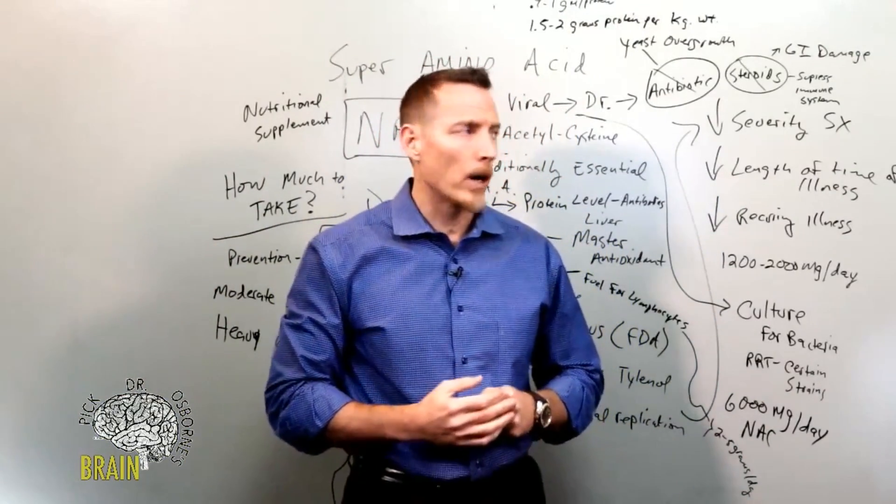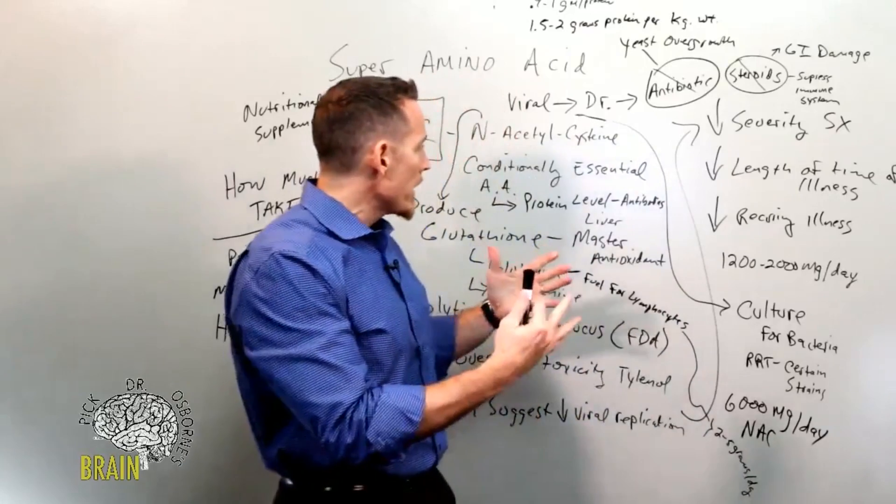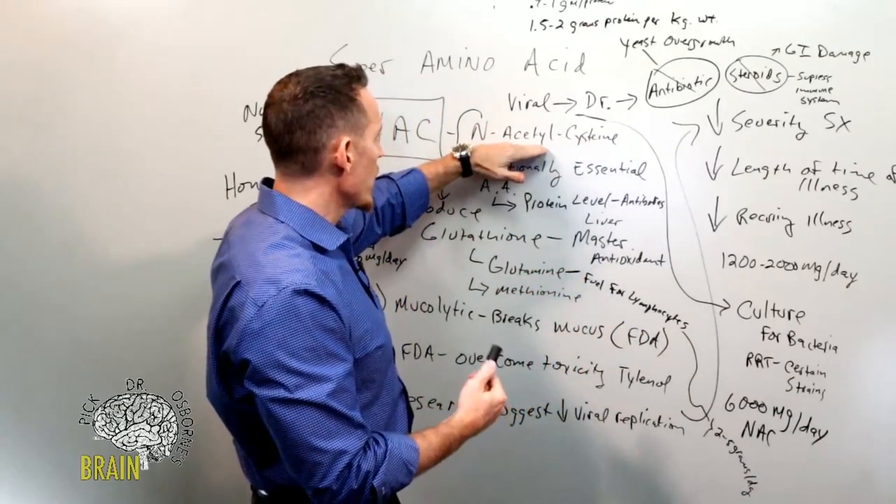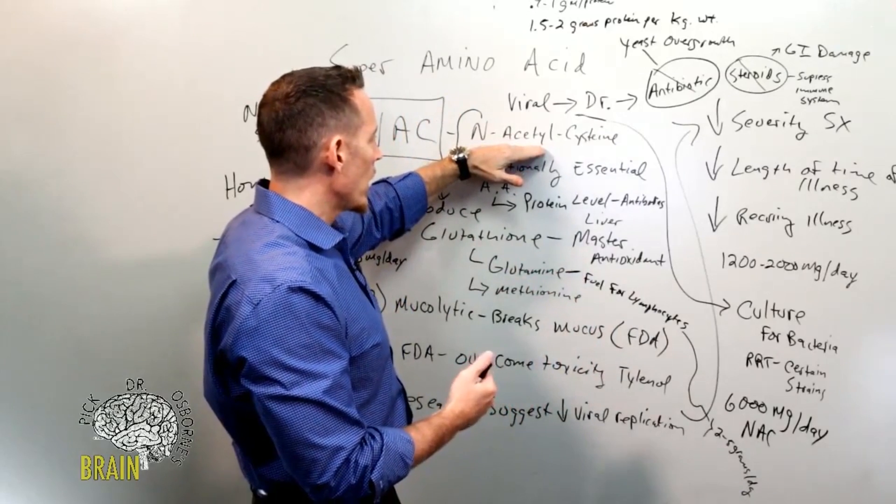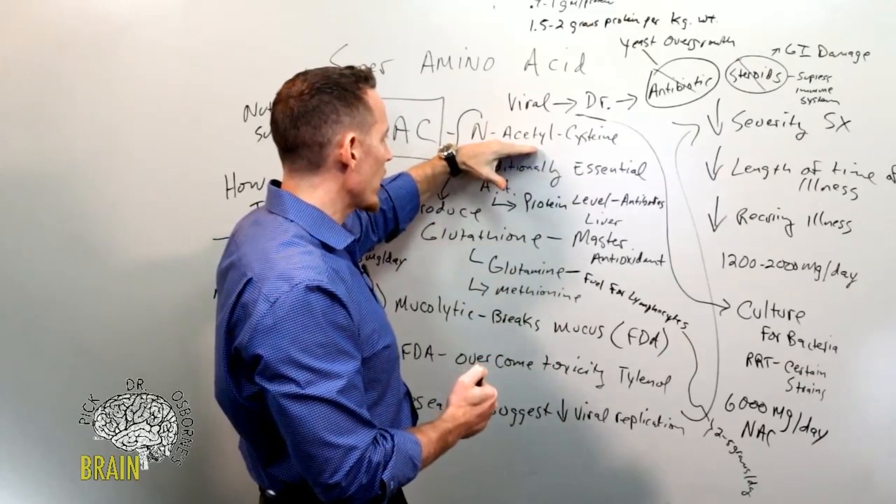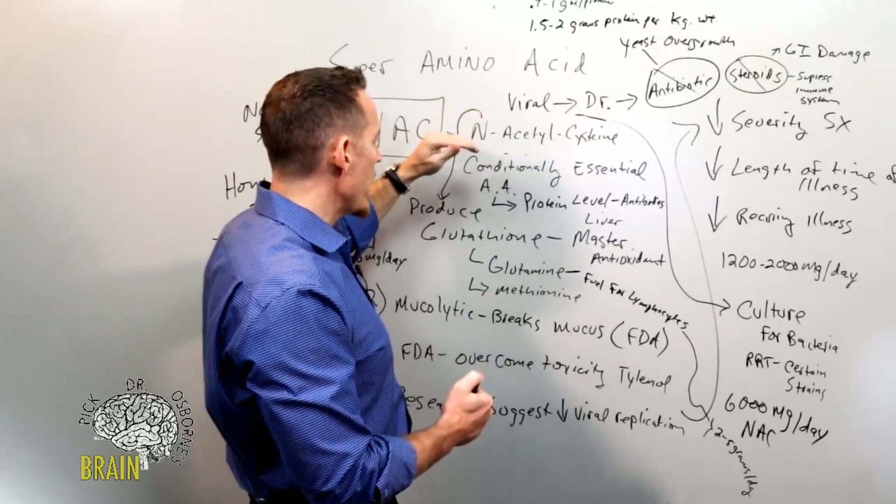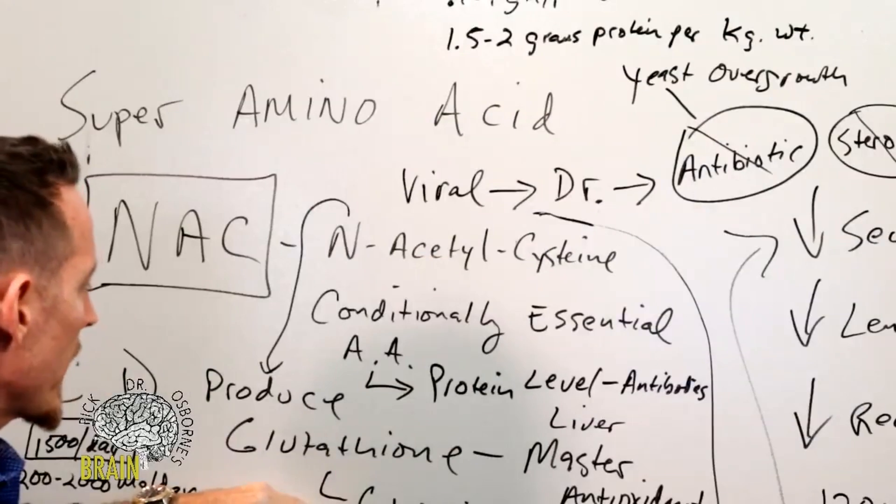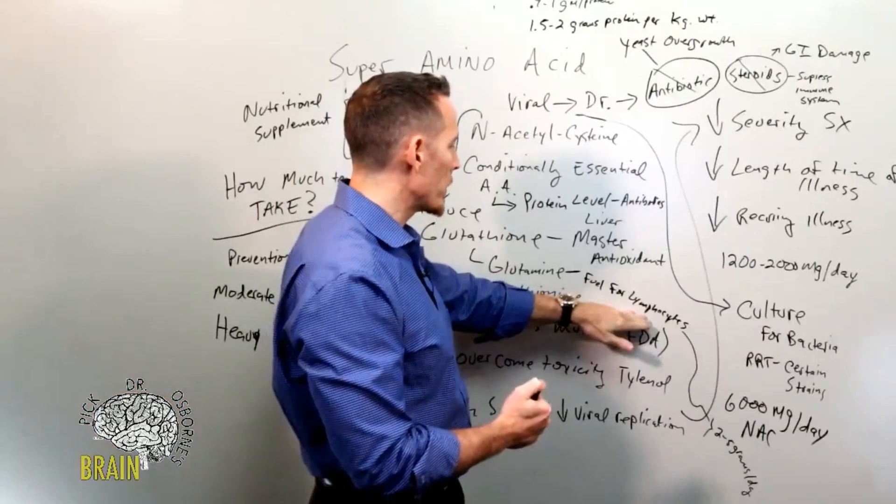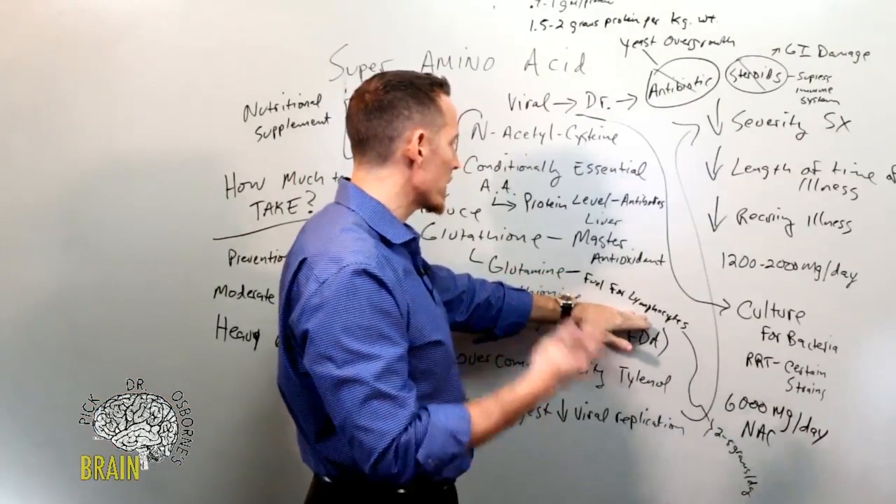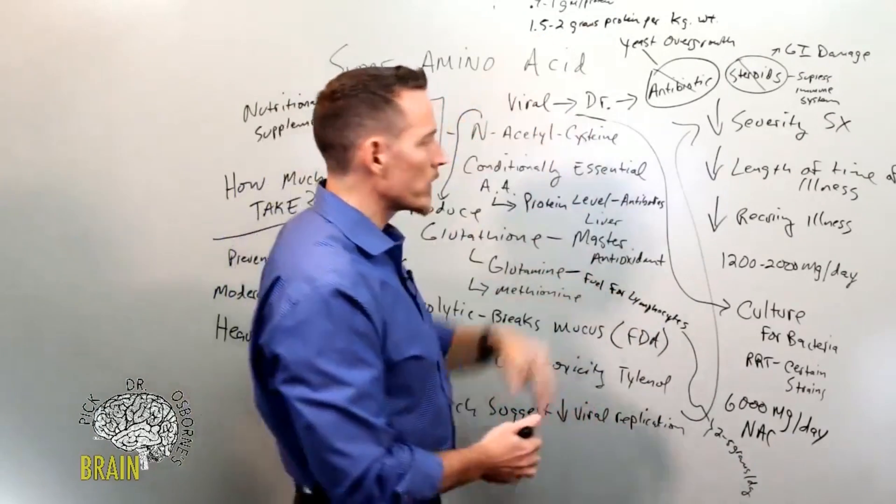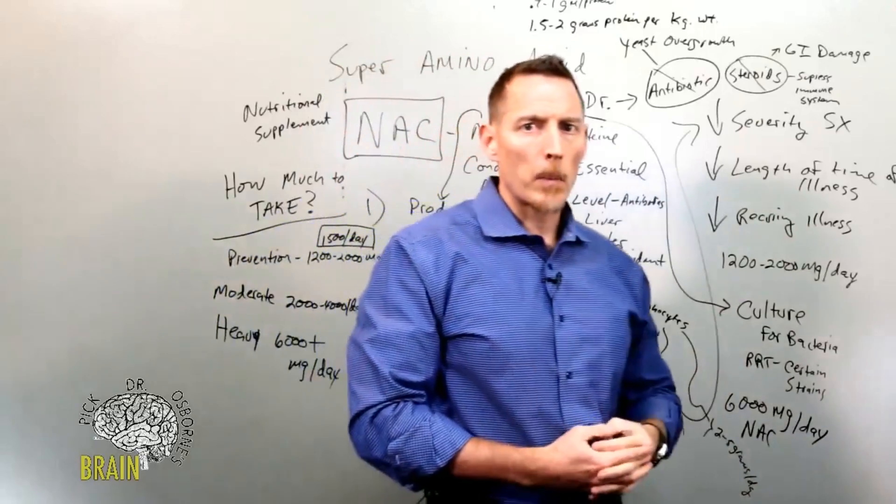Three lessons today: Lesson number one - N-acetylcysteine really is a super amino acid for viral issues, so it's a great thing to have in your medicine cabinet at home. Number two - make sure that you may consider adding glutamine because it's a fuel for your lymphocytes and can be very important in terms of helping your immune system function. Number three - your overall protein intake needing to approximate 1.5 to 2 grams per kilogram of body weight during this time of year.